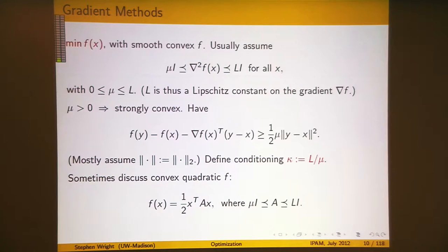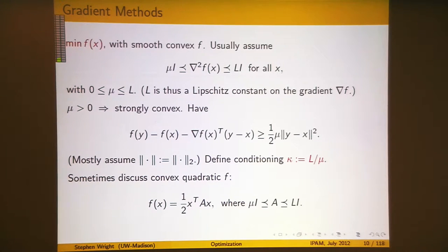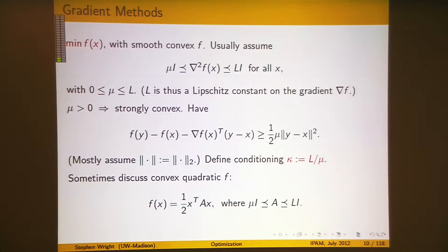Now let's talk about gradient methods, which are perhaps the most fundamental class of methods for smooth unconstrained optimization, fundamental in the sense that they can be extended into many more sophisticated methods and to problems involving constraints and non-smoothness.